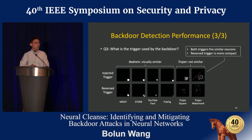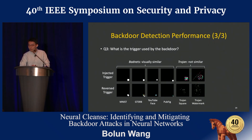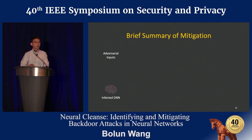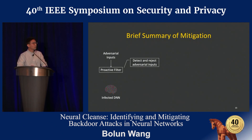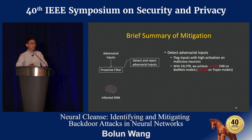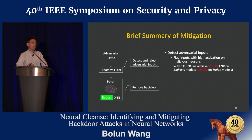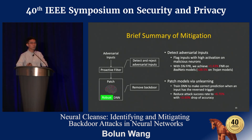Let me briefly go through how the mitigation process works. Our first goal is to detect and reject any possible adversarial samples with the trigger. We have the reverse-engineered trigger, so we know which neurons they fire inside the network — if any sample fires similar neurons, we know that sample is bad. This is how the proactive filter works. The second goal is to patch the model and remove the backdoor: we train the model to make correct predictions even when the trigger is present. Both approaches work very well, and the numbers are in the paper.